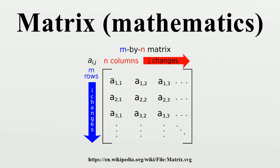The identity matrix I_n of size N is the N by N matrix in which all the elements on the main diagonal are equal to 1 and all other elements are equal to 0. It is a special kind of diagonal matrix. It is called an identity matrix because multiplication with it leaves a matrix unchanged: I_n A equals A equals A I_m for any M by N matrix A.